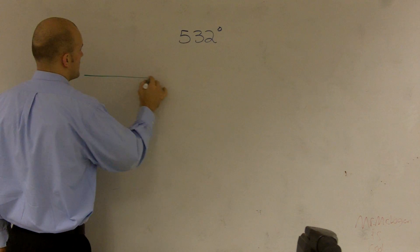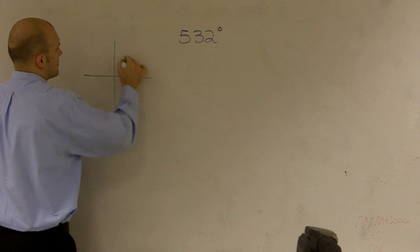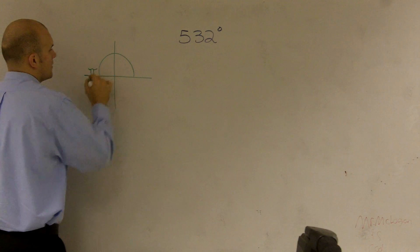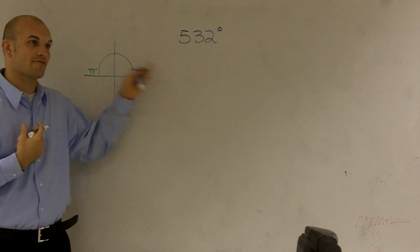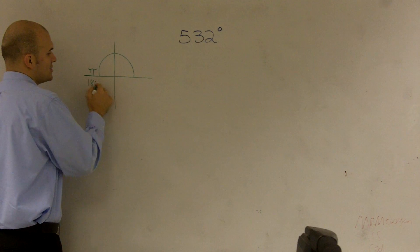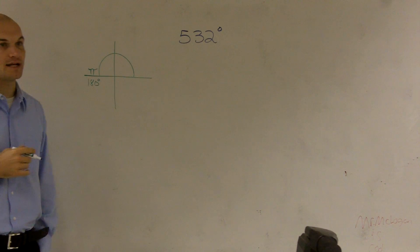If you look at a unit circle, pi, right, is halfway around the circle. I'm sorry, pi radians is halfway around the circle, which is the same thing which we talked about in geometry, which is a straight angle, which is 180 degrees.